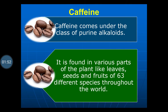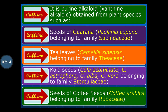Caffeine comes under the class of purine alkaloids. It is found in various parts of plants such as leaves, seeds, and fruits of 63 different species throughout the world. It is a xanthine alkaloid obtained from plant species including the seeds of Guarana, that is Paullinia cupana belonging to family Sapindaceae.